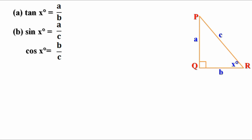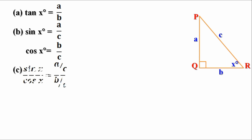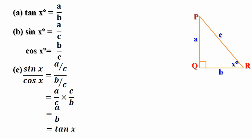Now we have to prove that sin x by cos x equal to tan x. Let us take sin x by cos x, that is equal to A by C divided by B by C. Division by a fraction means multiplication by its reciprocal. Here A by C should be divided by B by C. It is enough to multiply A by C by the reciprocal of B by C, that is C by B. So we can write it as A by C into C by B. C and C get cancelled and we get A by B. And A by B means that is equal to tan x degree. So we can say sin x by cos x equal to tan x.